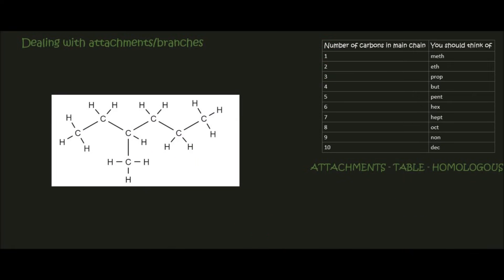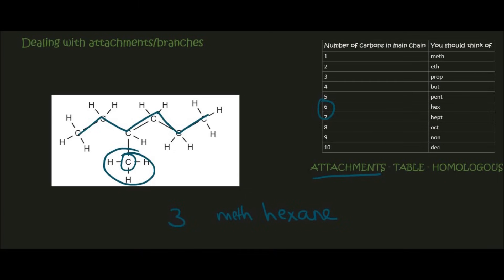Let's try another one. Your first step is always to identify the longest continuous chain. Going along, that gives us six carbons. Six gives us hex. We can see that it is an alkane because there are only single bonds with carbon and hydrogen, so that's hexane. Now we need to look at the attachments. We have an attachment on carbon number three, and it's a one-carbon attachment — so that's meth. Because it's a branch, you say methyl. So that molecule is 3-methylhexane.